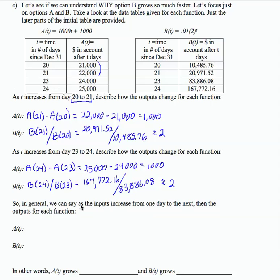So in general, we can say as the inputs increase from one day to the next, then the outputs for each function: For function A, the outputs increase by 1,000. And for function B, the outputs double.